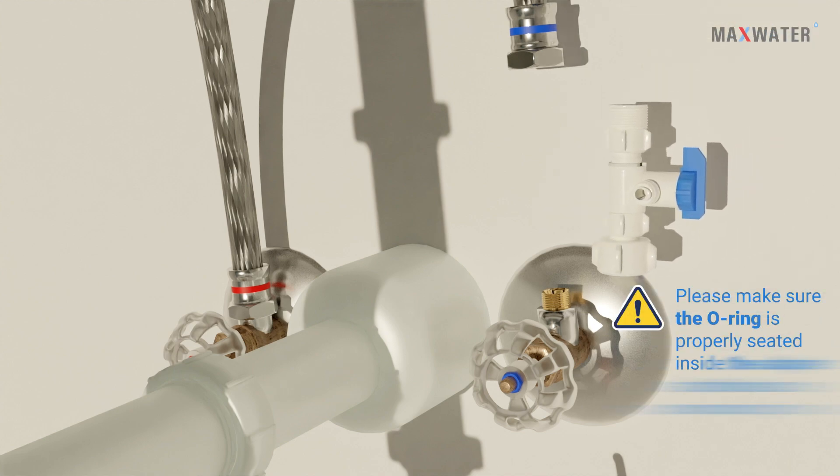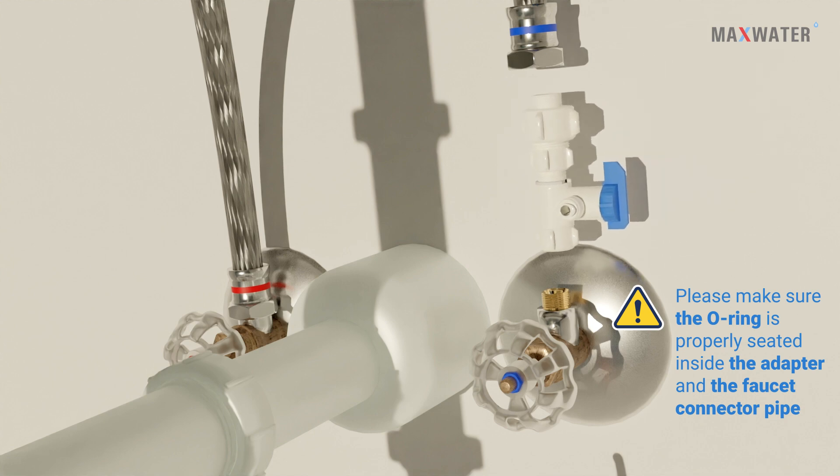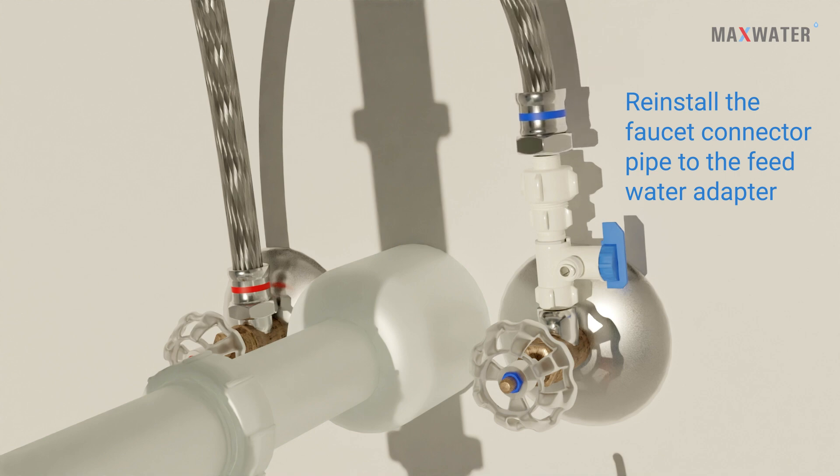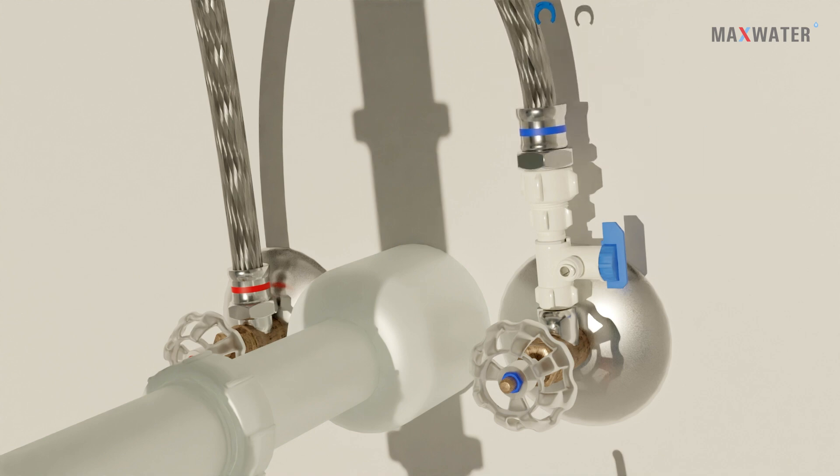Please make sure the O-ring is properly seated inside the adapter and the faucet connector pipe to prevent leaks. Reinstall the faucet connector pipe to the feed water adapter and tighten it with a wrench, then insert the red tube to the quick connect nipple.